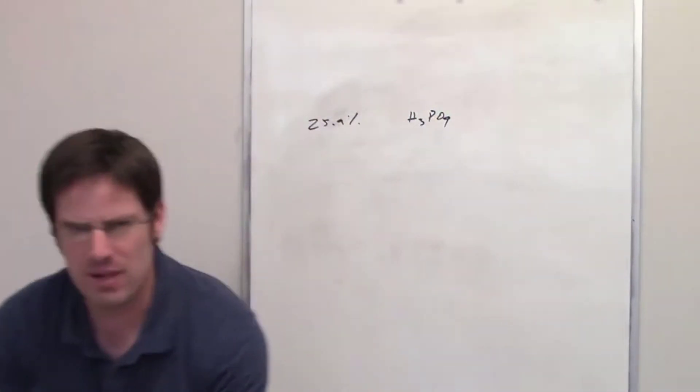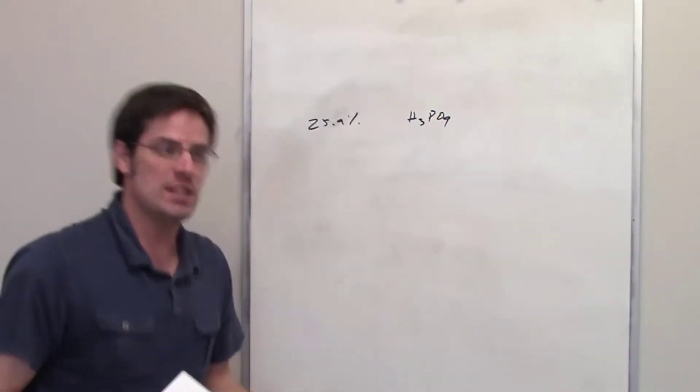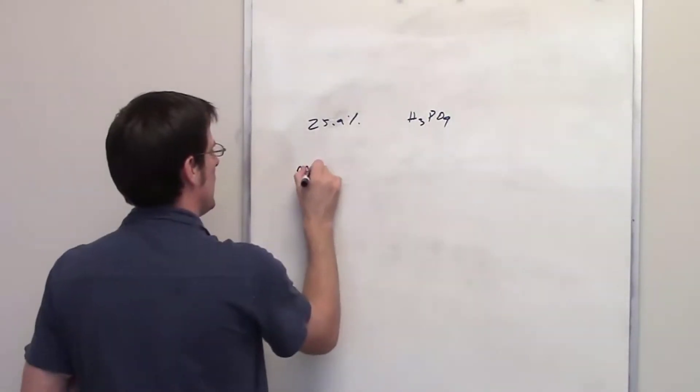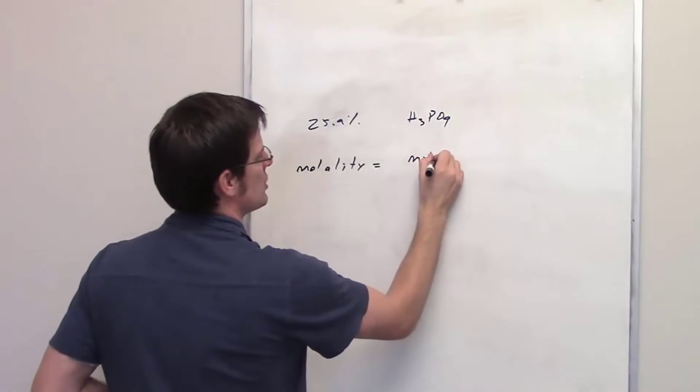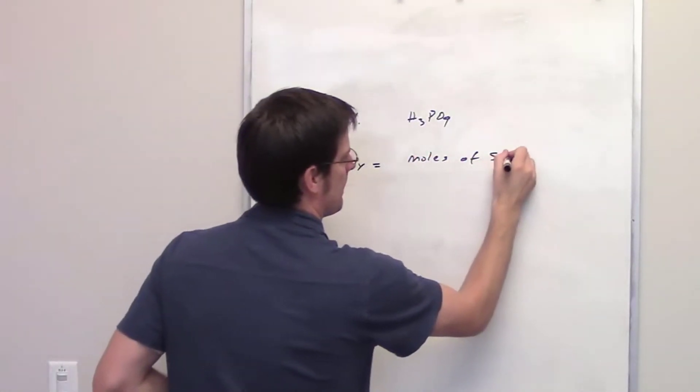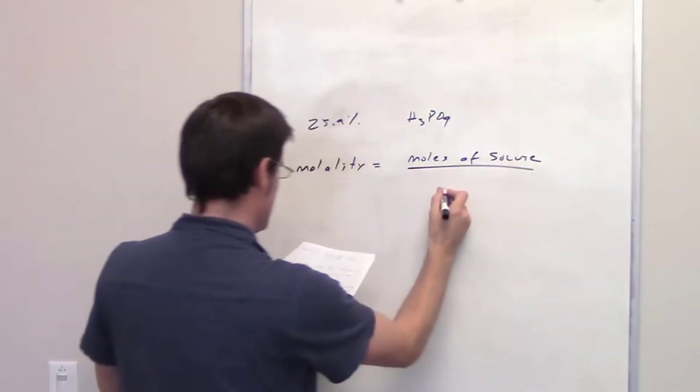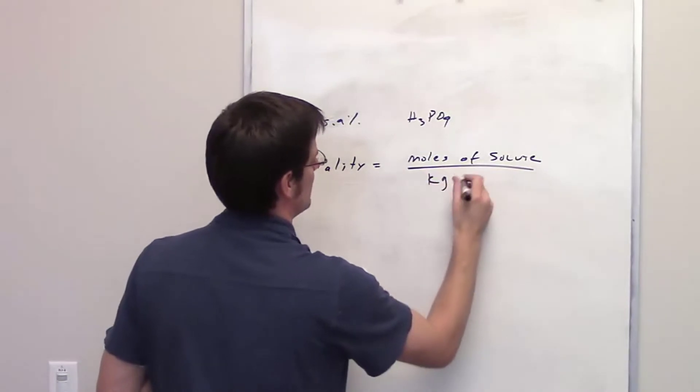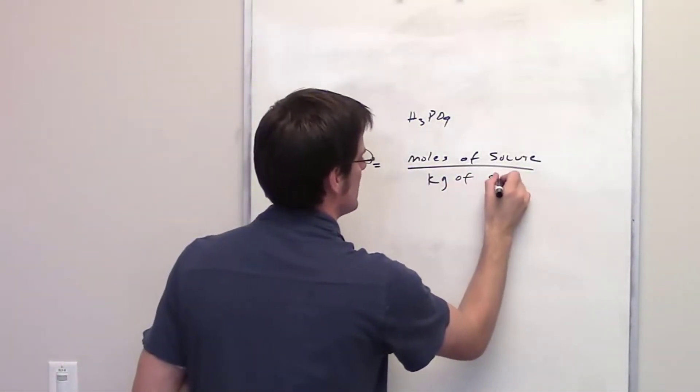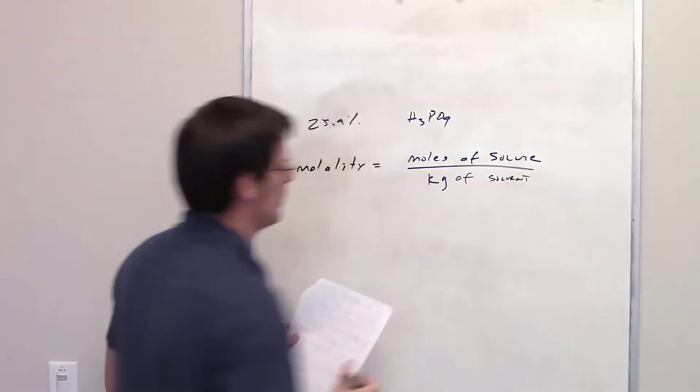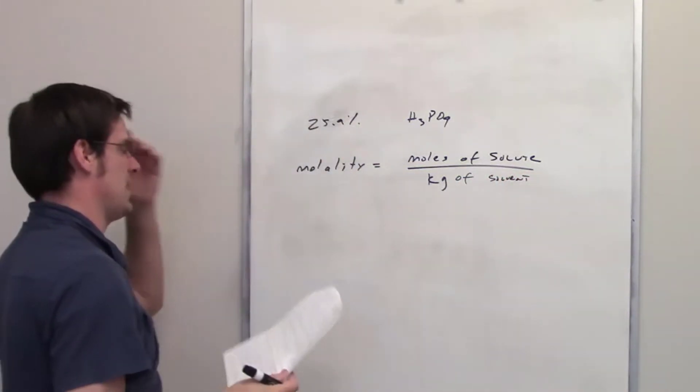We have to remember that molality, which is different from molarity, molality is equal to moles of solute divided by liters, or sorry, kilograms. Yeah, if it were liters, that would be molarity. Kilograms of solvent, so this is really a mass relationship. Well, it's not purely a mass relationship, but anyway.